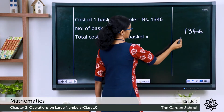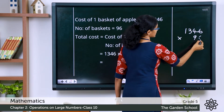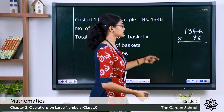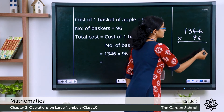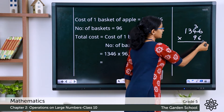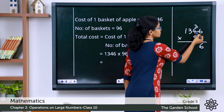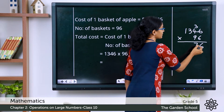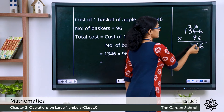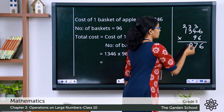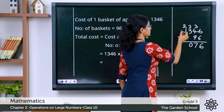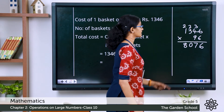1346 × 96. We start with the ones digit: 6 × 6 = 36, write 6 carry over 3. 6 × 4 = 24, plus 3 = 27, write 7 carry over 2. 6 × 3 = 18, plus 2 = 20, write 0 carry over 2. 6 × 1 = 6, plus 2 = 8. So the first partial product is 8076.